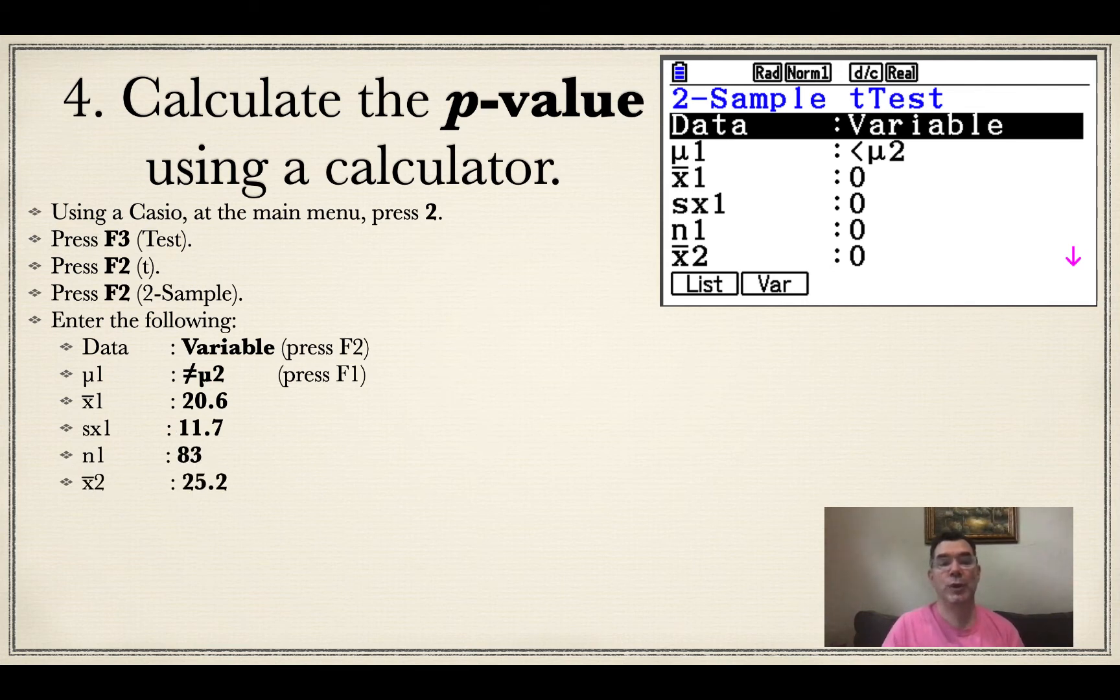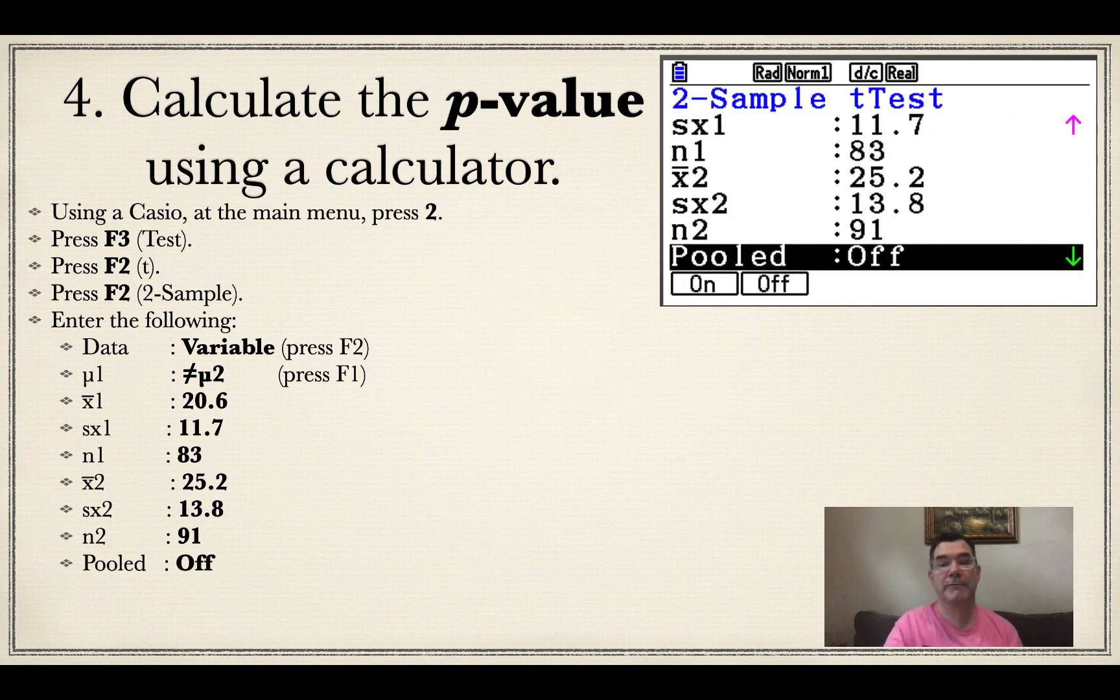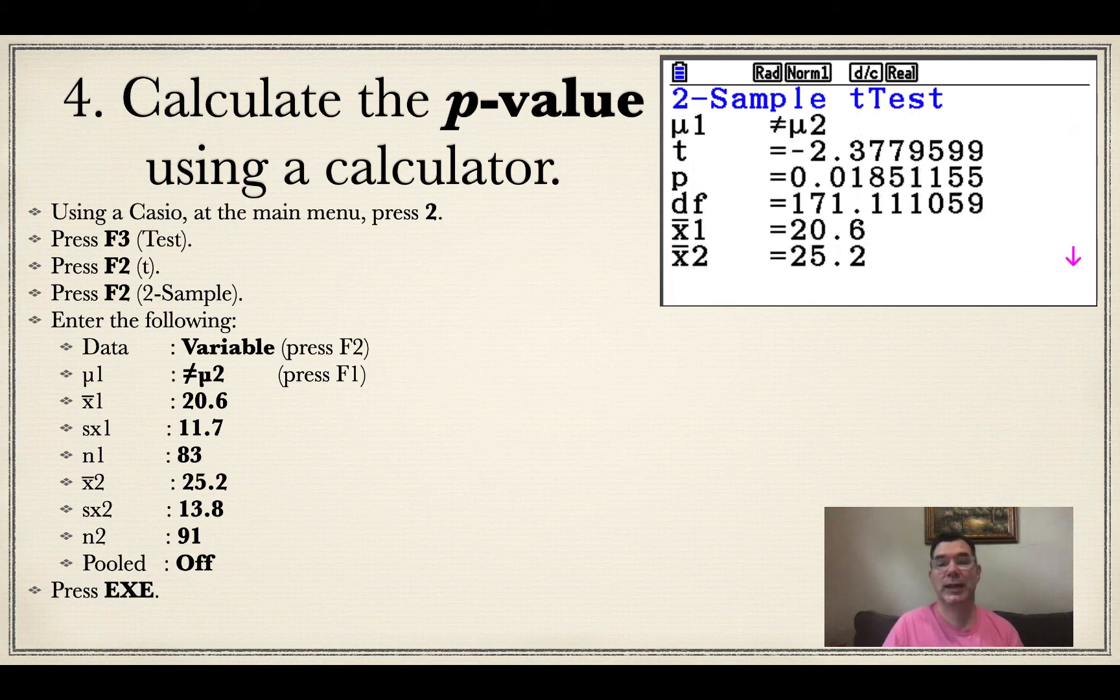For group 2, x-bar is 25.2. The standard deviation is 13.8, and the number of people was 91. So I have to put all of that in for both samples 1 and 2. Pooled will be off. And when I do all of that and I press exe, this is the information that I get.